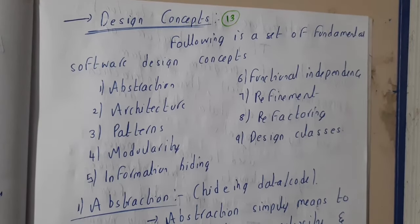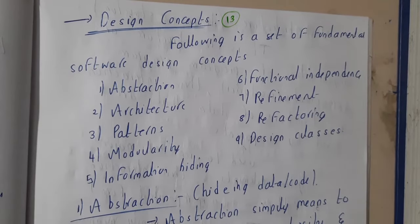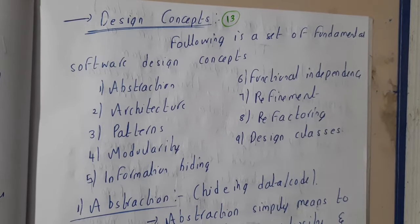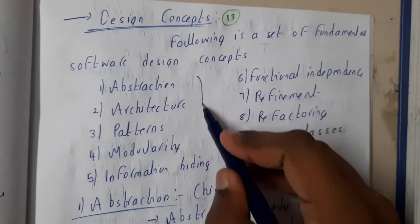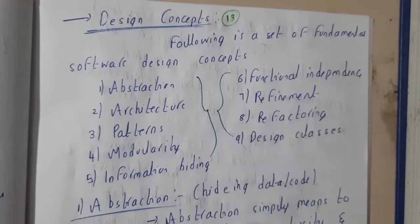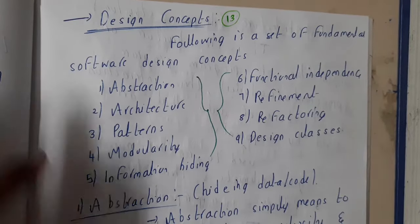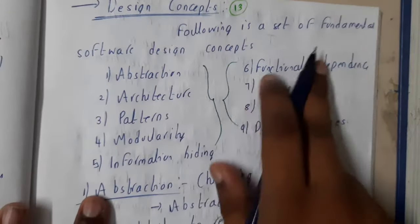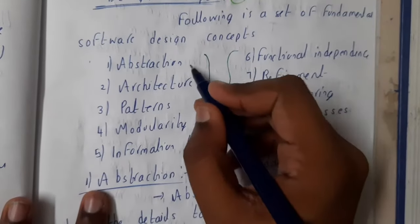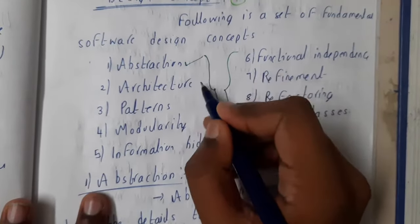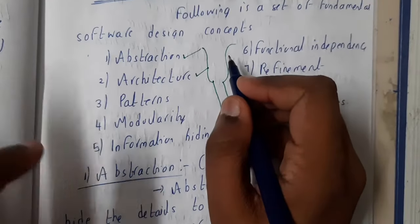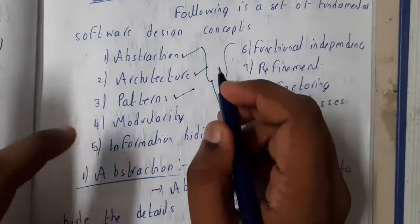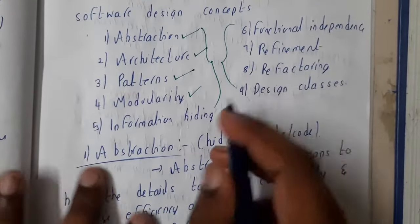Hello guys, we are back with our next lecture. In this lecture, let us go through the designing concepts. There are majorly nine different concepts which we will be following while designing. These are a set of fundamental designing concepts: abstraction, hiding of something, architecture — so you should follow some architecture. If there are any patterns like previous code, you can use it — reusability. Modularity is nothing but dividing into modules.